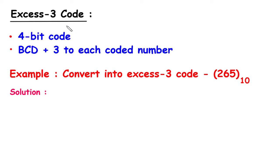XS3 code is a 4-bit code. It is derived from BCD by adding 3 to each coded number.